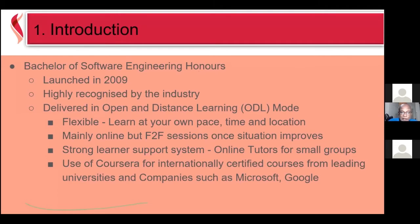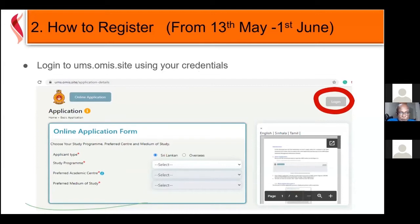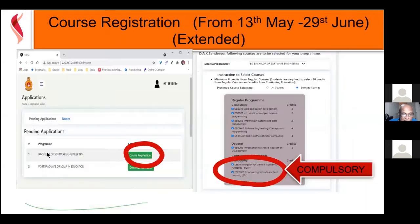Now, going through the registration. You have got your login details for the UMS.OMIS.OS site — that is the site where you applied for this program, made the application payment, and booked your selection test. You use the same credentials and log into the system. When you log in, it will tell you that you have passed the selection test and you can move to registration. It will show you the courses you have applied for.